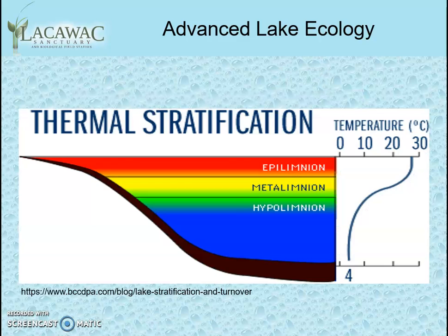The unique density changes of water based on temperature cause lakes in temperate zones to stratify or layer in the summer. Warm water caused by the sun and warm summer air is less dense and stays at the top of a lake, known as the epilimnion. Limnion comes from the Latin word limnos for lake, and the prefix epi means on top of. The bottom layer, or hypolimnion, remains cool. The metalimnion or thermocline middle layer is a layer of rapid temperature and density transition between the two layers.